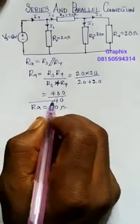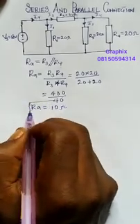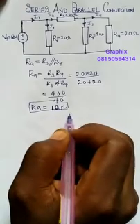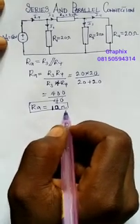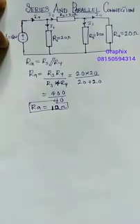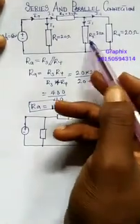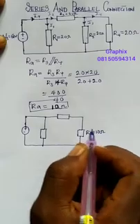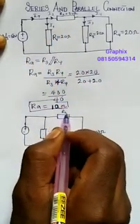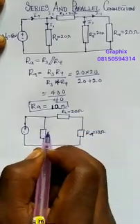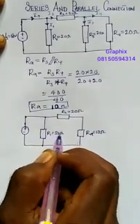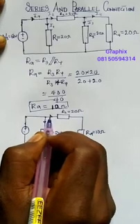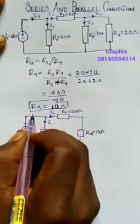Now we redraw the resistor circuit. Since both R3 and R4 are combined into one, they are now Ra = 10 ohms. R2 still remains as 20 ohms, and R1 equals 20 ohms. So I1 is coming here and I2 is coming here — this is my IT.